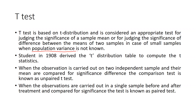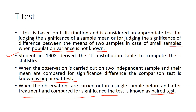We apply this when population variance is not known and sample sizes are very small. Student in 1908 derived the t-distribution table to compute t-statistics, which is why it is called the Student t-test. When observations are carried out on two independent samples and their means are compared for significance, the test is known as an unpaired t-test. When observations are on a single sample before and after treatment, the test is known as a paired t-test.